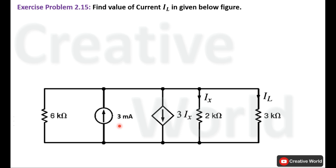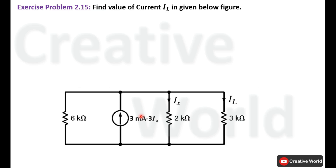Now we will merge these two current sources. Both have opposite polarities to each other, so the equivalent current source will have the value obtained by subtracting 3ix from 3 mA. The direction of the equivalent current will be upward because 3ix is subtracted from 3 mA, indicating that 3ix will be less than 3 mA. Replace the current sources with a single current source whose value is 3 mA minus 3ix. The circuit is simplified now.